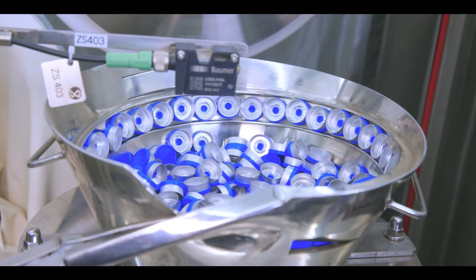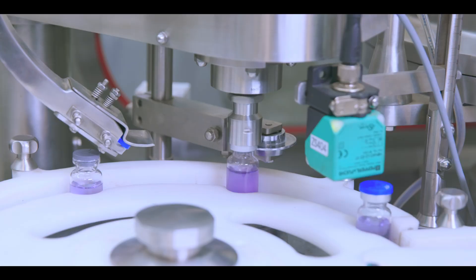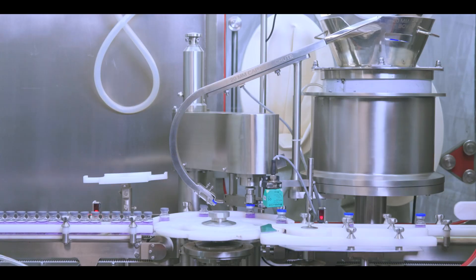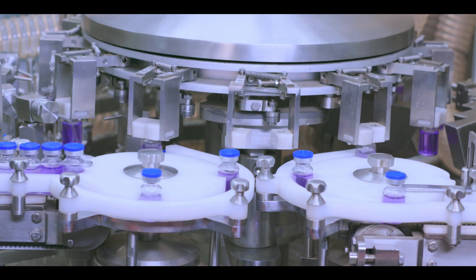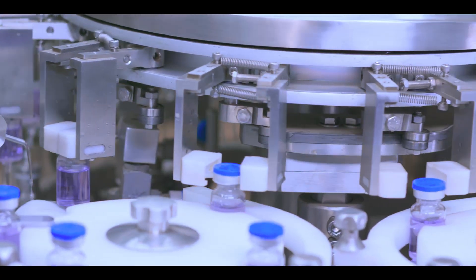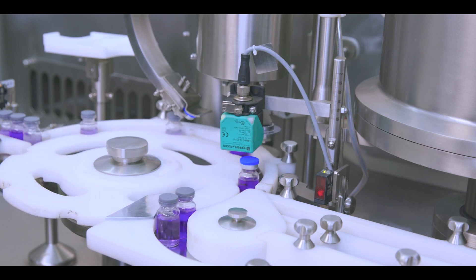The vial cap sealing machine seals the vials with pre-sterilized caps. Caps are fed into the isolator through a rapid transfer port. Its indexing mechanism and crimping action ensures the complete sealing of vials. The rejection system removes the uncapped vials from the line.